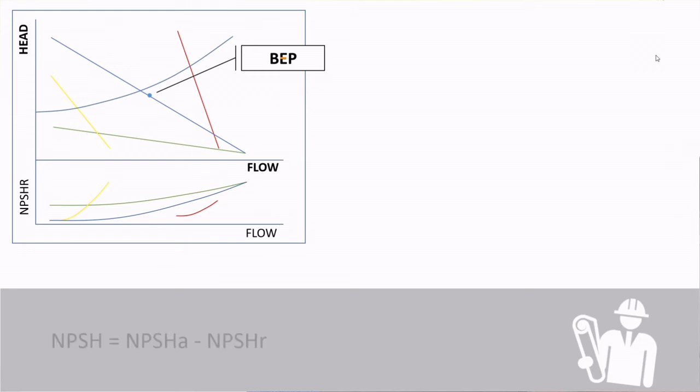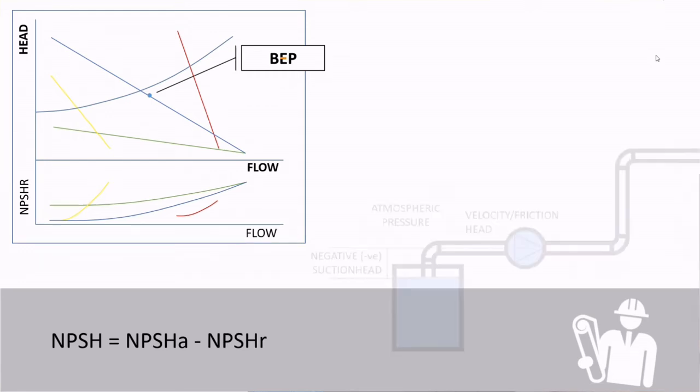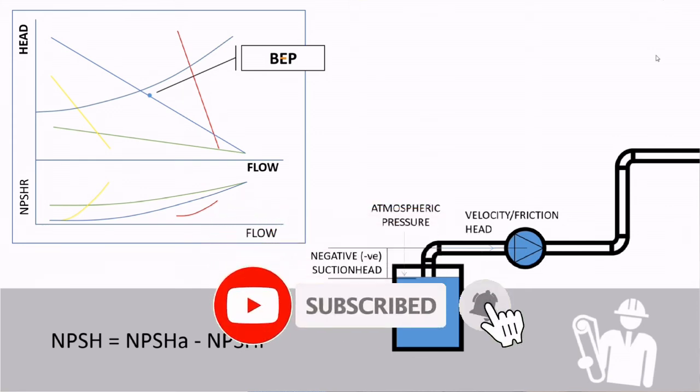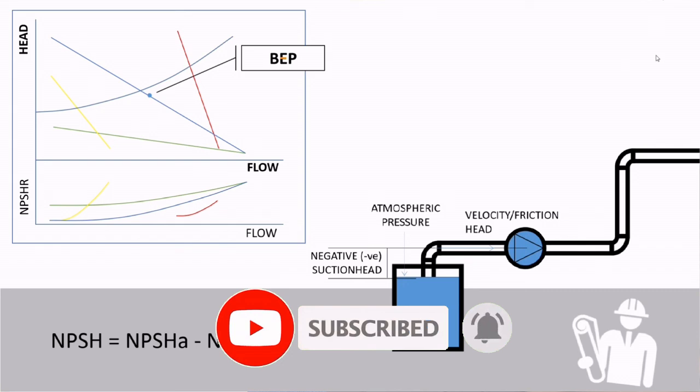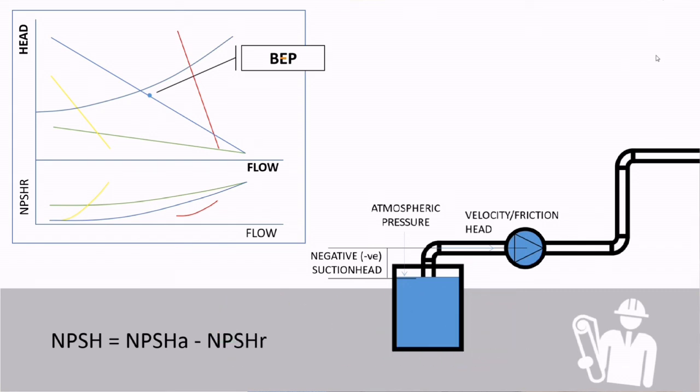NPSH is the net positive suction head available minus the net positive suction head required. NPSH-A is made up of the pump suction side static head, velocity and friction head at a given flow rate, and the atmospheric pressure. NPSH-R is what the manufacturer curve illustrates for your given flow rate. To avoid cavitation across the pump, the NPSH must be positive across all required flow conditions.